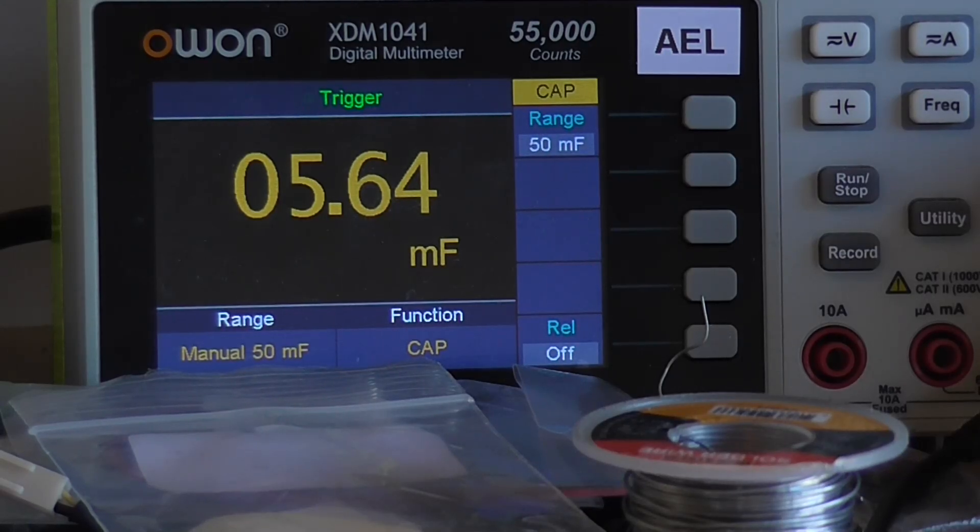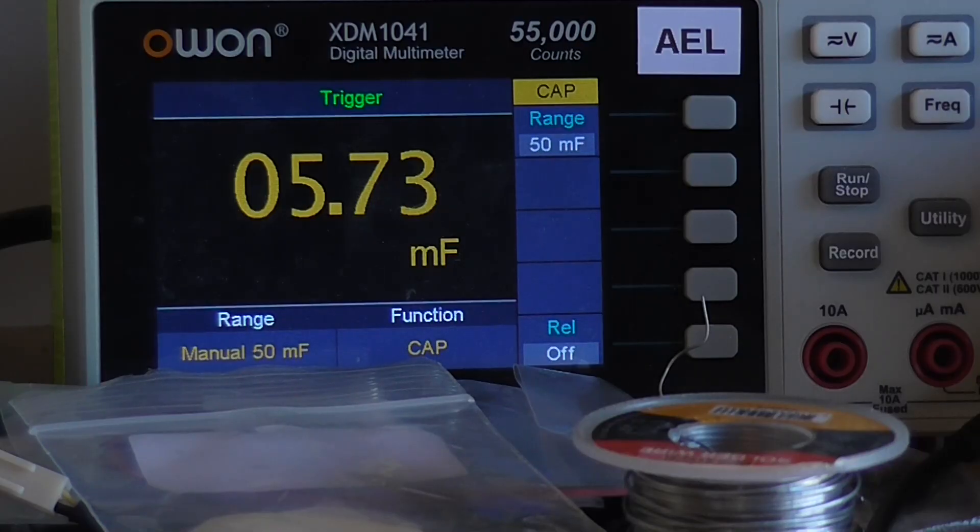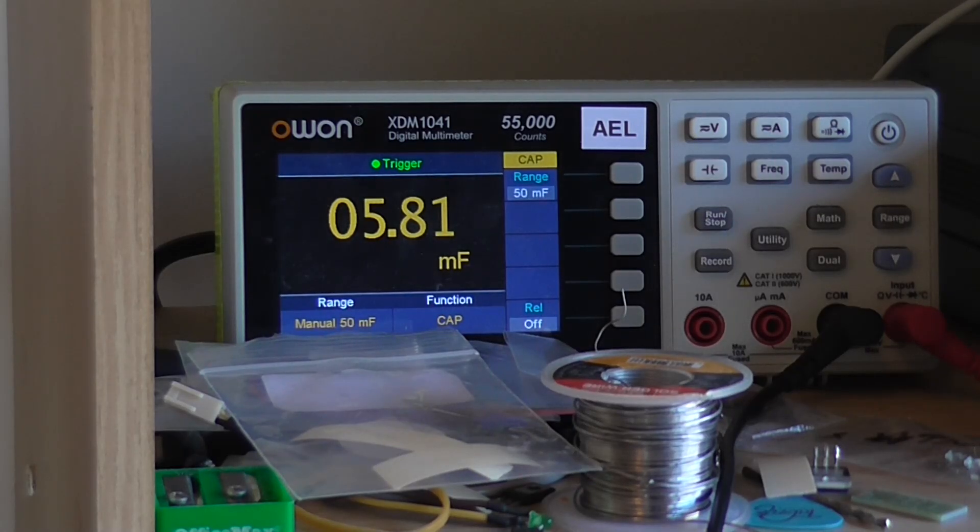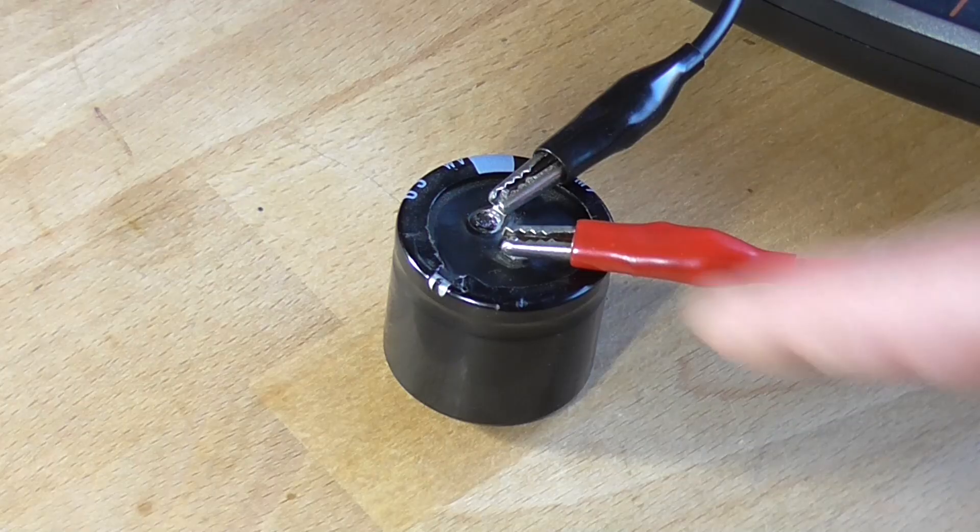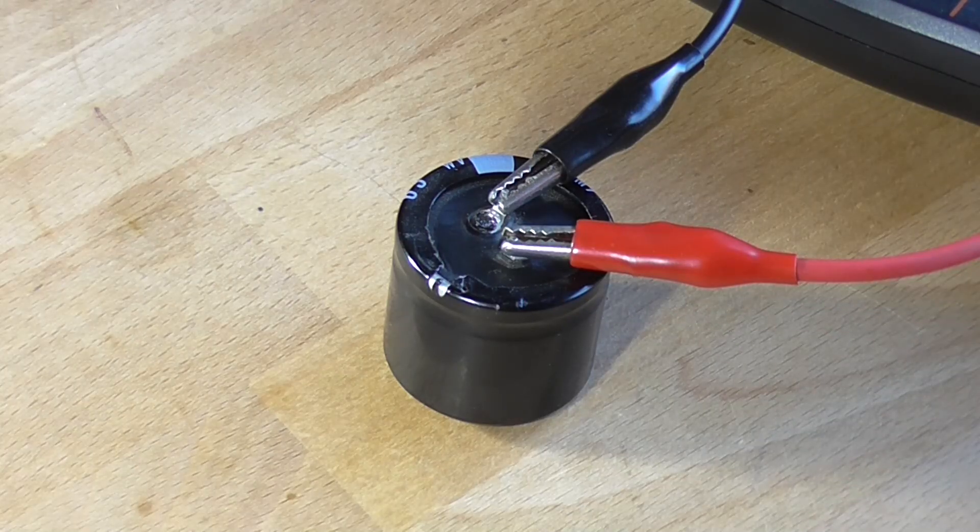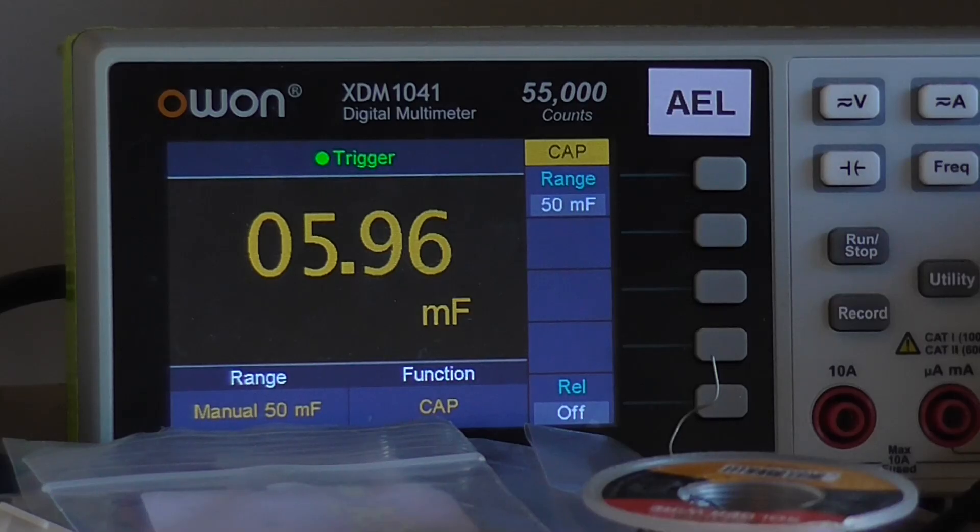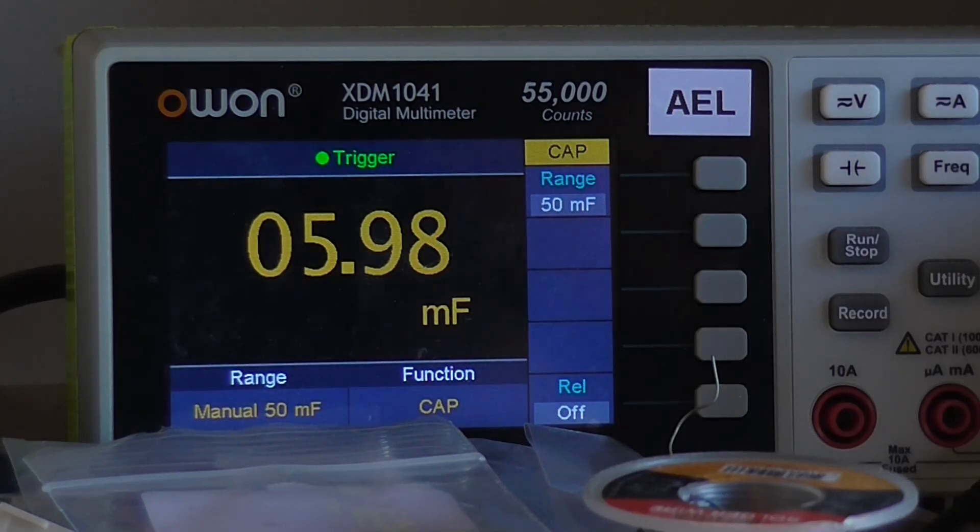Well, that's interesting, it's actually dropped to 5700 microfarads. That's rather interesting. So what does this mean? Well, it could mean that the ESR of this capacitor is starting to get on the high side, although the capacitance is starting to slowly come back up. So again, it could be the multimeter itself is not accurate enough to measure the capacitance properly.